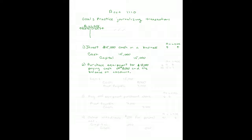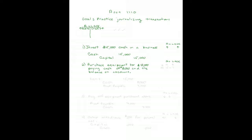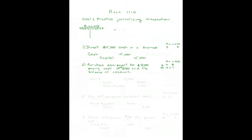Second transaction: purchase equipment for $15,000, paying cash of $8,000 and the balance on account. Looking at the balance sheet equation: equipment goes up, cash goes down, and liabilities go up. Equipment goes up $15,000, cash goes down $8,000, and liabilities go up $7,000 — so assets change by $7,000. To make equipment (an asset) bigger, I look at my T-account and see I need to debit equipment.